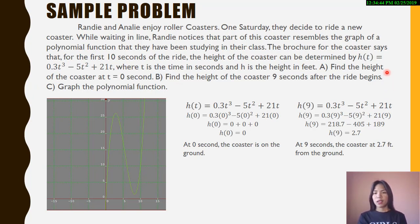These are the questions: A) Find the height of the coaster at t = 0 seconds. B) Find the height of the coaster 9 seconds after the ride begins. C) Graph the polynomial function.